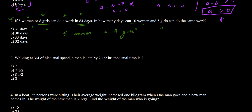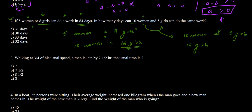Since 5 women can do the work in 84 days and 8 girls can also do it in 84 days, 5 women are equivalent to 8 girls. Multiplying by 2, 10 women are equivalent to 16 girls. So 10 women and 5 girls together equals 16 plus 5, which is 21 girls total. We now need to find how many days 21 girls take to do the work that 8 girls do in 84 days.